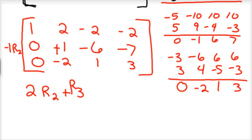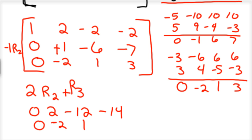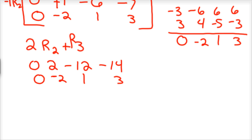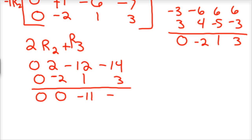When you do that, take 2 times row 2: that'd be 0, 2, negative 12, and negative 14. And row 3 is 0, negative 2, 1, 3. Add those together and you've got 0, 0, negative 11, negative 11.